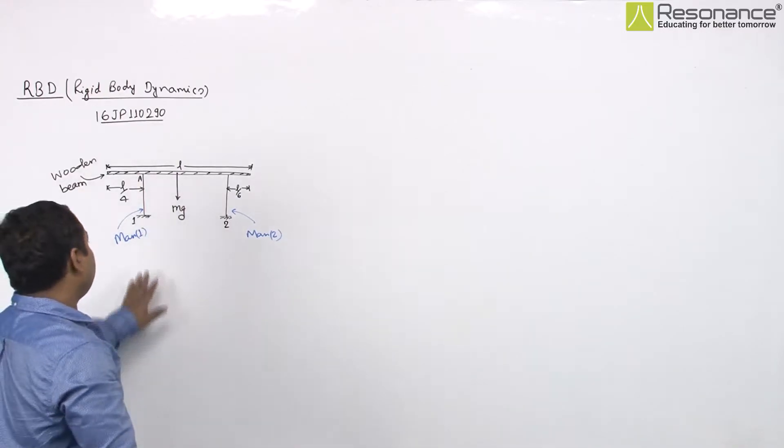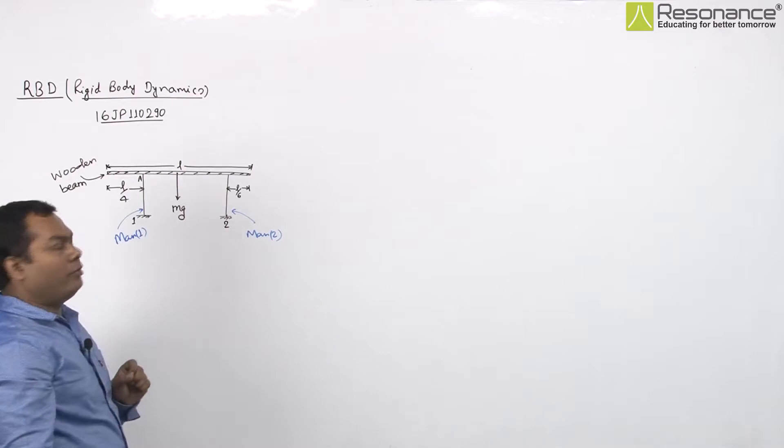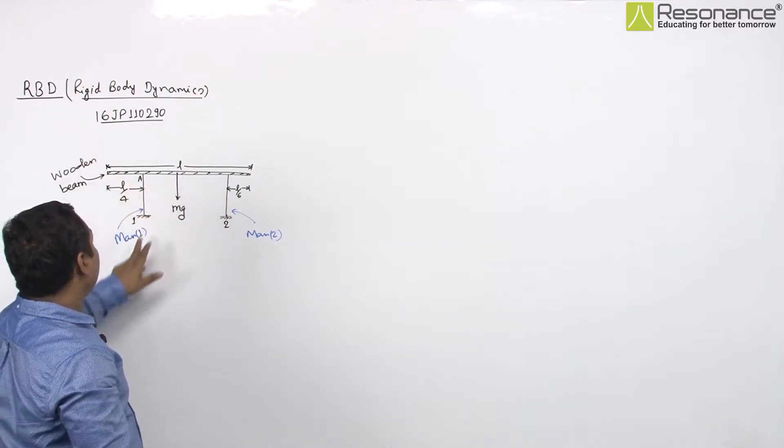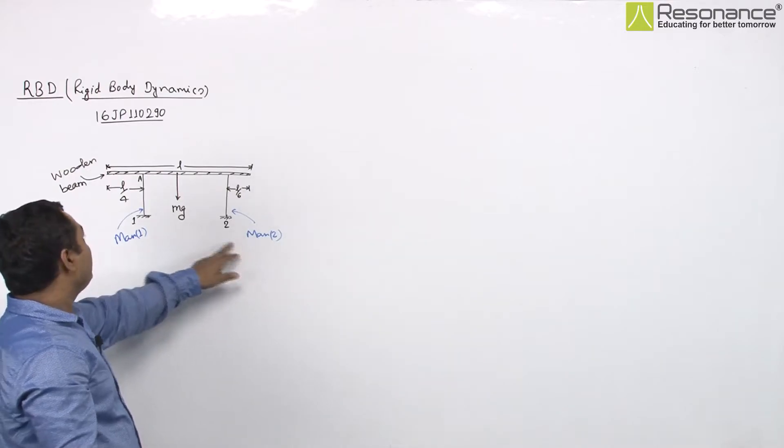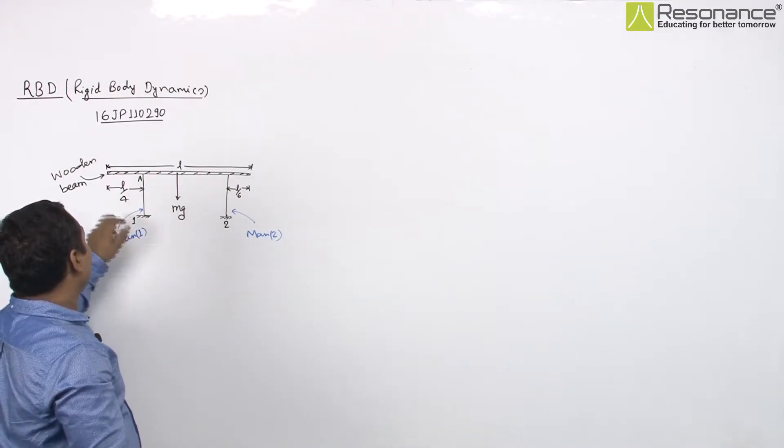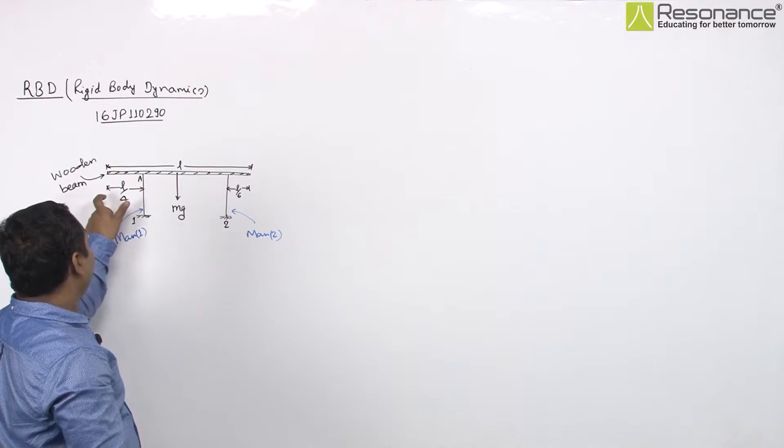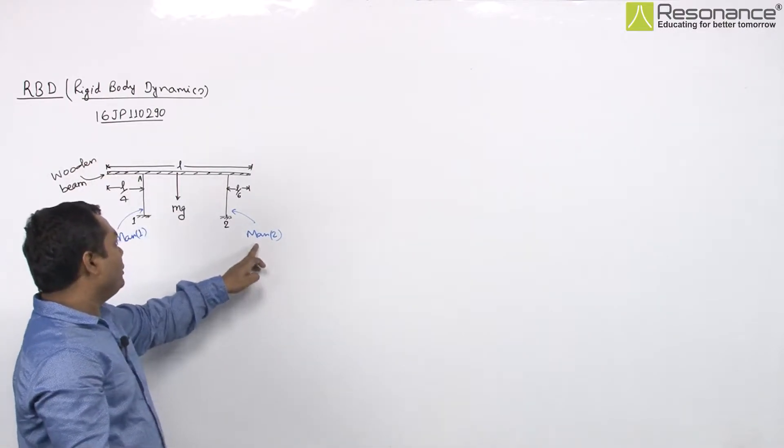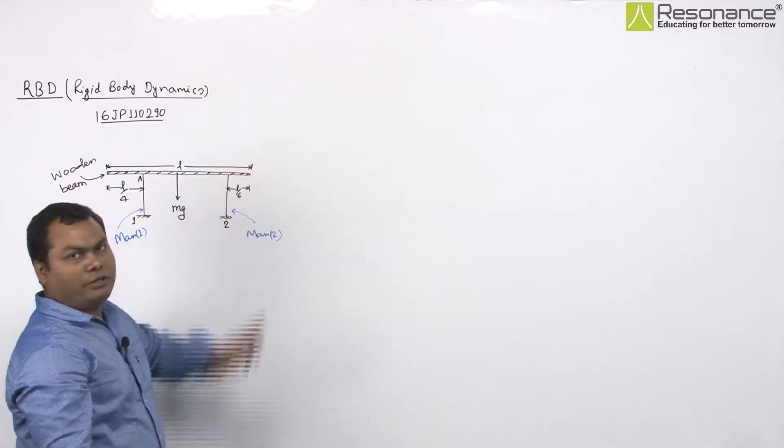In this question, there is a wooden beam which is carried by two men M1 and M2 on their heads. M1 is at distance L/4 from this end and M2 is at distance L/6 from this end.